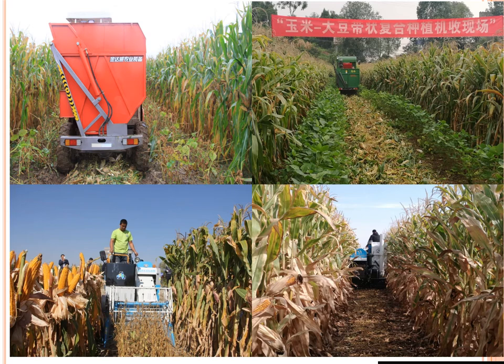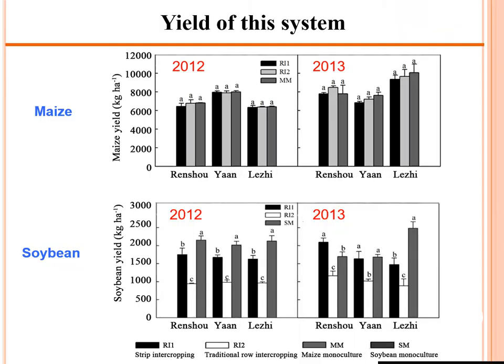We have also developed specific farming machinery for sowing and harvesting maize and soybean. Regarding yield results, we have conducted several experiments over many years starting from 2007, and results from 2012 and 2013 are shown for maize and soybean yield.